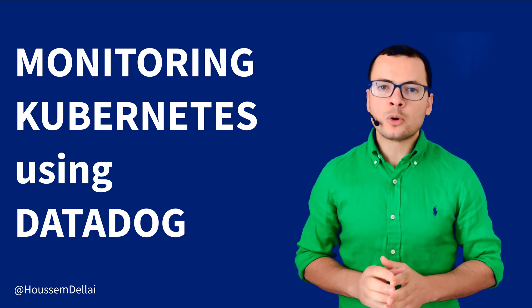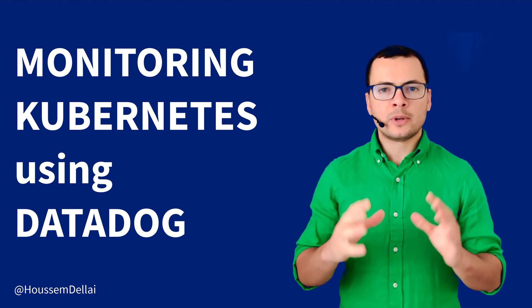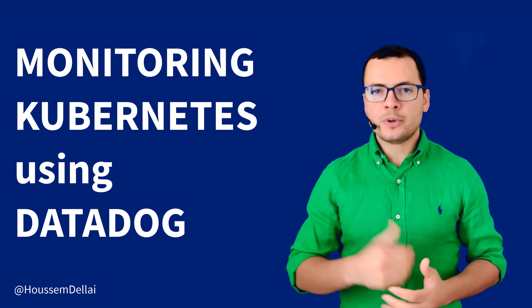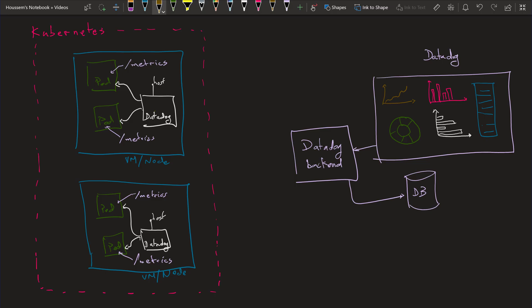In today's demo, I'll walk you through how we can configure our applications to expose some custom metrics on /metrics, for example, and then we configure Datadog to collect those metrics. Let's see how we can collect metrics from our applications running inside Kubernetes using Datadog.